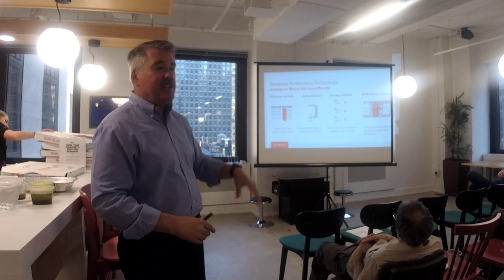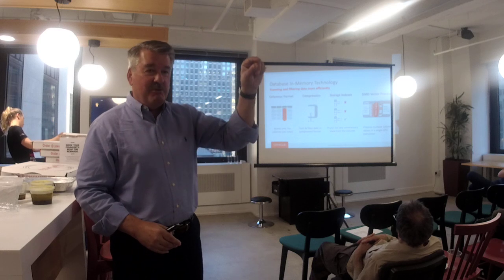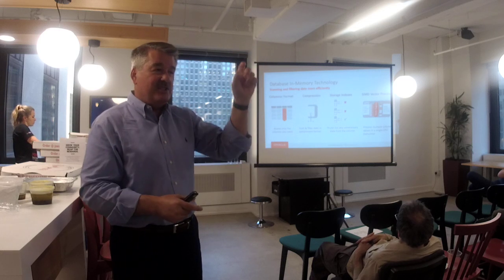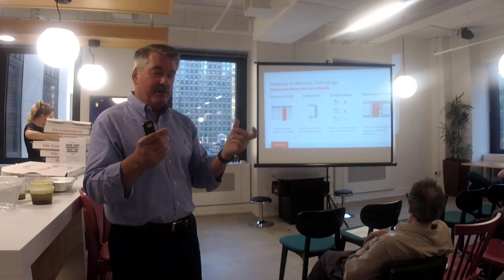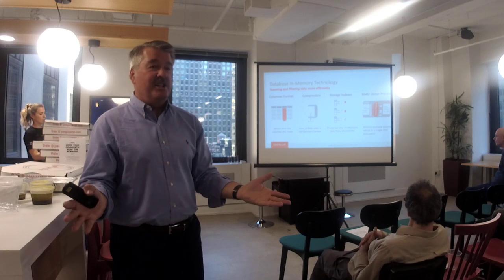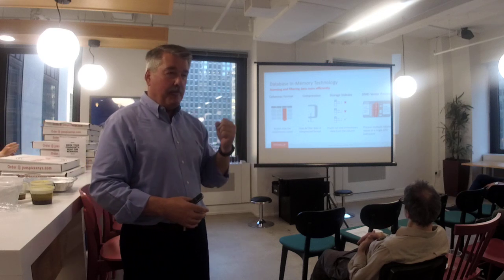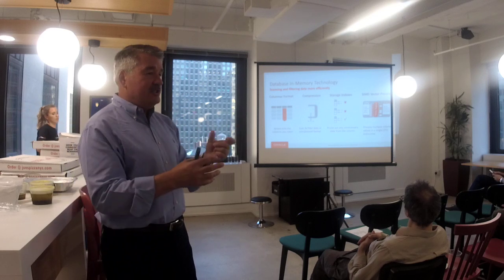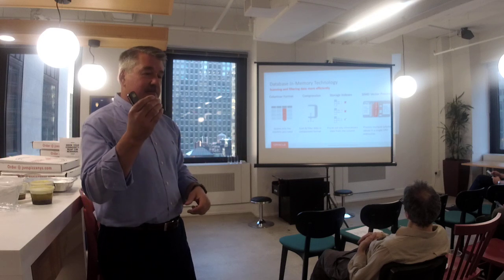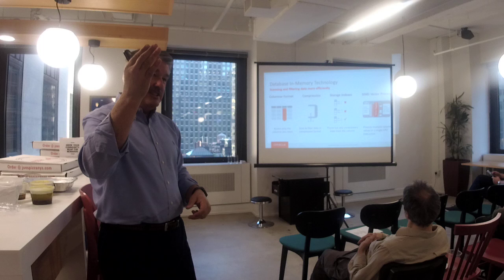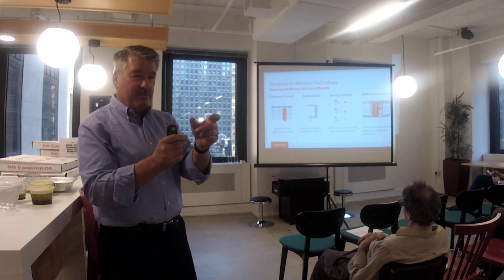And we'll have these in-memory storage indexes for each of those columns. So as we're scanning down an object and going through each of the IMCUs, if we have a where clause predicate, we can actually skip over data that we know isn't going to be in that particular IMCU. In essence, if you're doing a primary key lookup, typically you would go to the index, get the row ID, and access the table and be done.